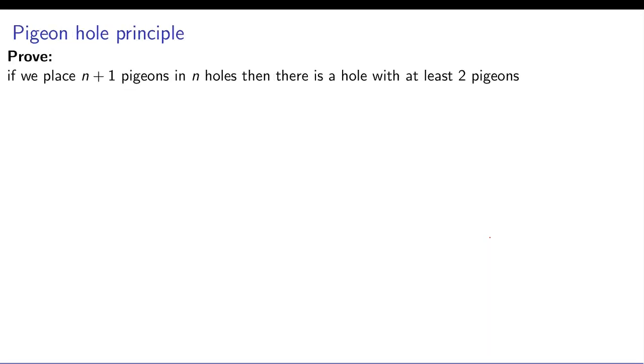Now let's look at another problem. If we place n plus 1 pigeons in n holes, then there is a hole with at least two pigeons. This is called pigeonhole principle and it's commonly used in a lot of mathematical conditions. But how do you prove such a theorem?